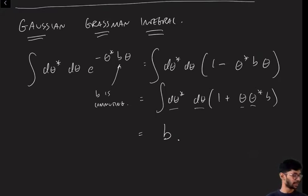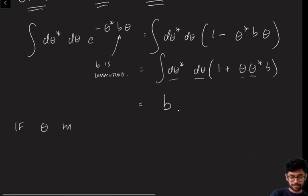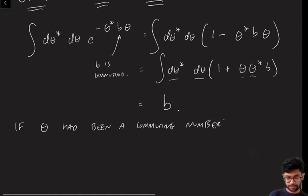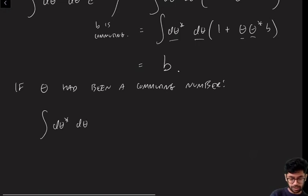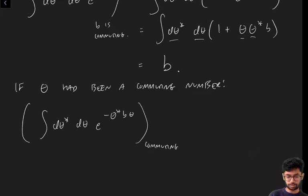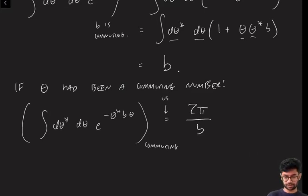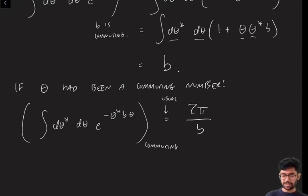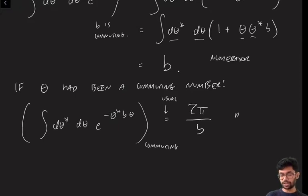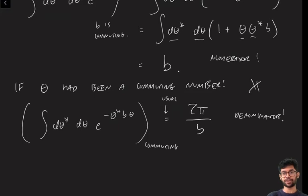Compare this to the ordinary commuting case: ∫dθ* dθ e^(−θ* B θ) for normal numbers gives 2π/B. The 2π is just a normalization, but crucially B is in the denominator for ordinary numbers and in the numerator for Grassmann numbers. This difference turns out to be extremely important and has significant physical consequences for the path integrals we're going to do.